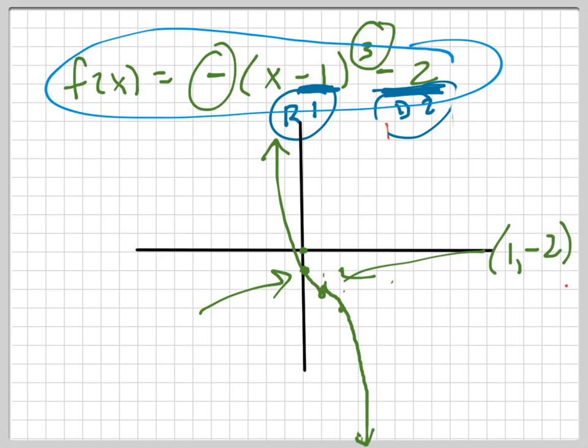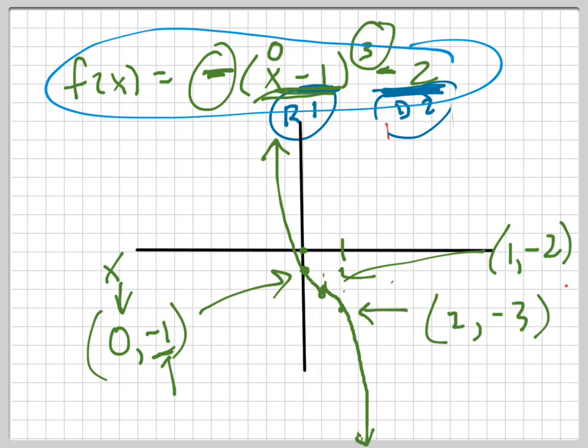What's that point right there? That point is 0, negative 1. And what's that point right there? 2, negative 3. Let's check if those points work. If I plug in 0 for x, I should get negative 1 for y. When I plug in 0, what's 0 minus 1? It's negative 1. What's negative 1 cubed? Negative 1. What's the negative of negative 1? Positive 1. What's 1 minus 2? Negative 1. And that's what I should have gotten, because that's what y is.